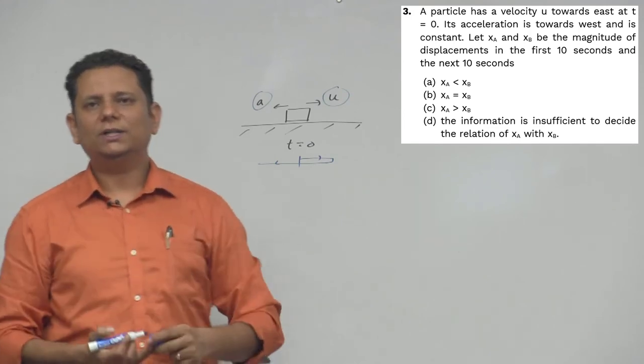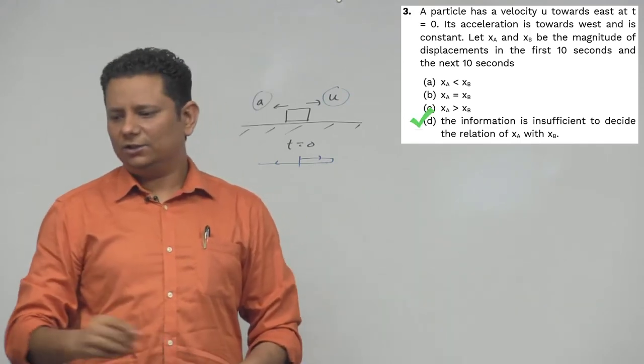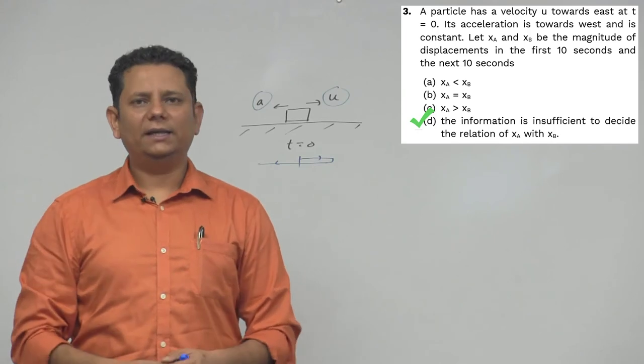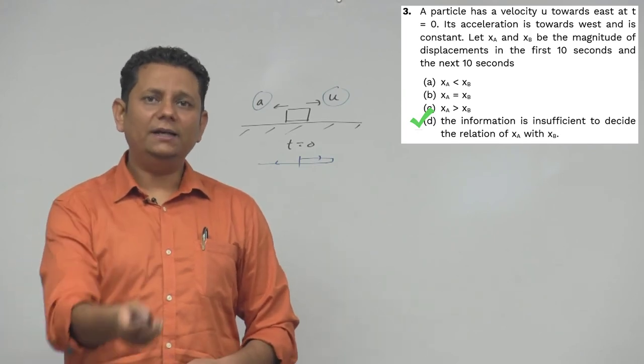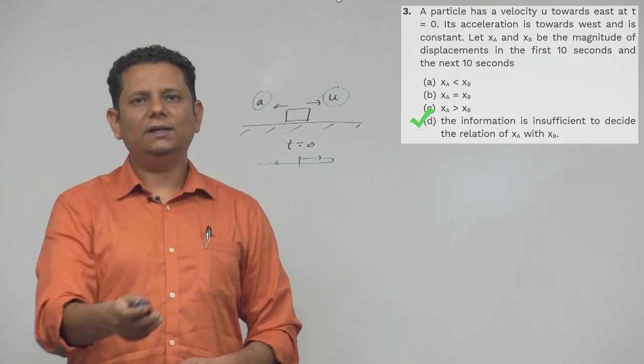We cannot say because the information is insufficient. We need the actual values of u and a so that we can predict this. Option D, insufficient information, would be the right answer.